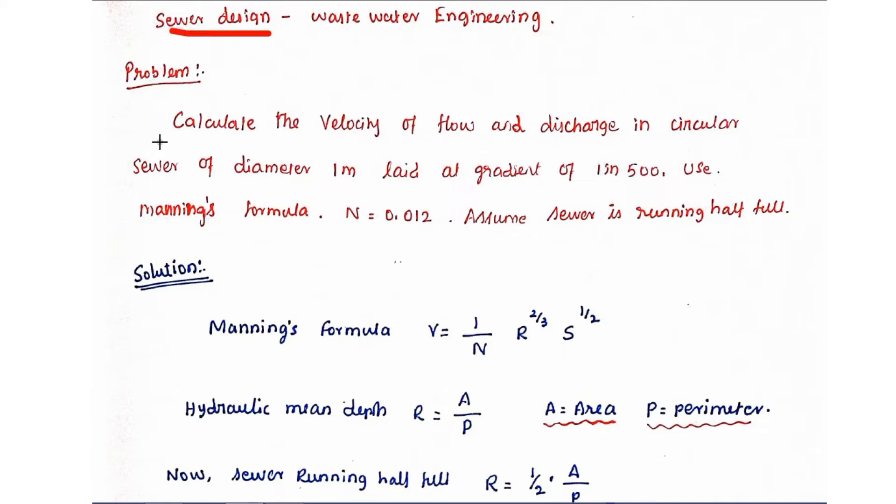The problem: calculate the velocity of flow and discharge in circular sewer of diameter 1 meter laid at gradient of 1 in 500. Use Manning's formula, n equal to 0.012.